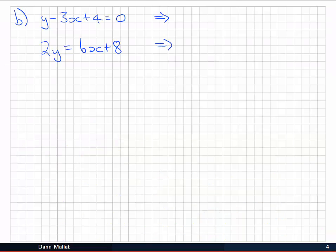In part b we have these two lines, which we need to rearrange to y equals mx plus c form. The first simply becomes y equals 3x minus 4, and the second, dividing by 2, will become y equals 3x plus 4. Now on this occasion, we can see that the slopes of both lines are equal to 3. When the slopes are equal, we can say that the lines are parallel.